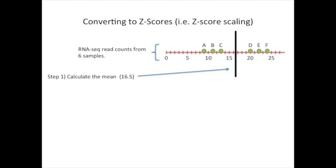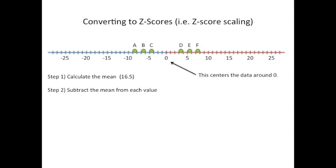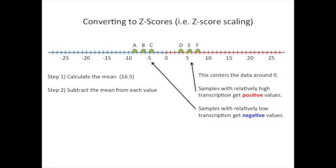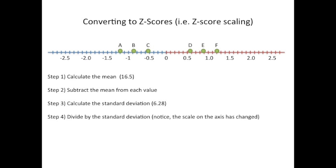The first step is to calculate the mean of the data. In this case, that's 16.5. The second step is to subtract the mean from each value. By subtracting the mean from each value, we center the data around zero. Samples with relatively high transcription get positive values, and samples with relatively low transcription get negative values. The third step is to calculate the standard deviation. In this case, it's 6.28.